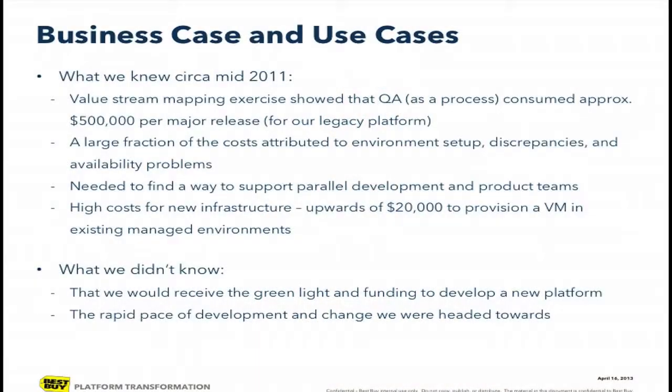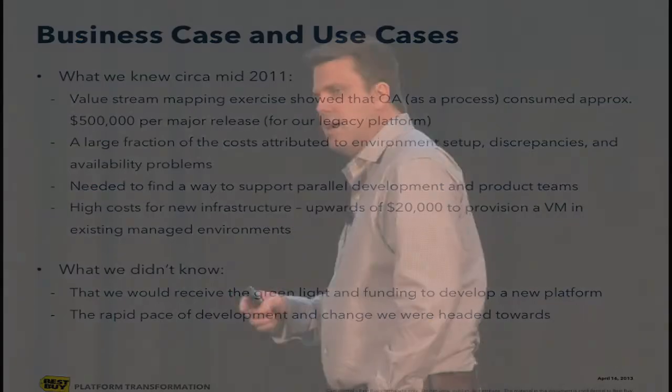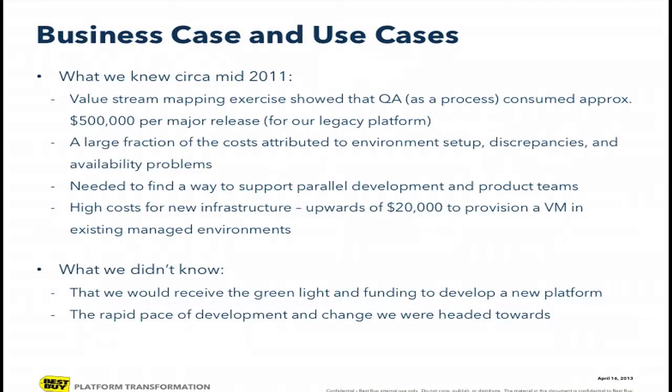Going back to mid-2011, we ran a VSM exercise looking at how much we spent for a major release. VSM is a lean manufacturing concept — Toyota has used it successfully. We looked at what were the friction points: a lot of the manual work, a lot of communication between teams asking each other to load data or move builds out to sets of infrastructure. A large part of those costs were discrepancies, regressions that found their way in, and availability problems. You have more hands doing things manually and you get more trouble.